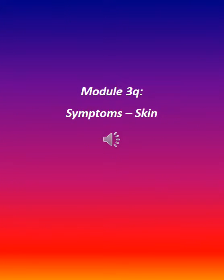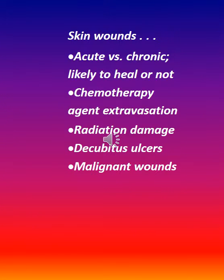Module 3Q: Symptoms — Skin. Skin wounds: acute vs. chronic, likely to heal or not. Types covered include chemotherapy agent extravasation, radiation damage, decubitus ulcers, and malignant wounds.